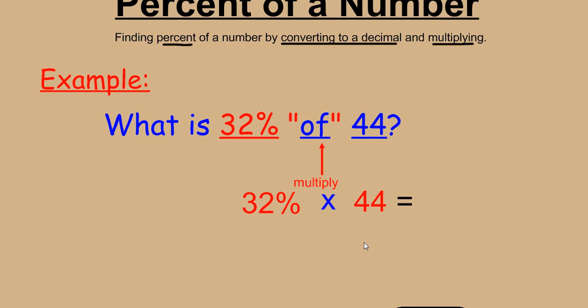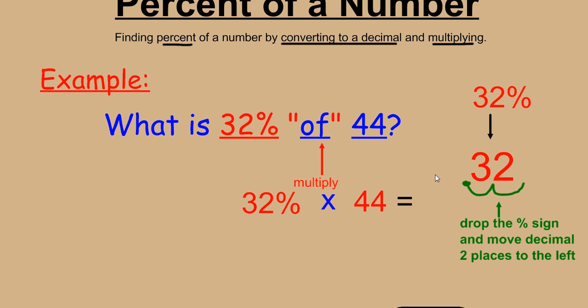Now, it's easiest if you first convert the percent into a decimal. So 32% as a decimal, we simply rewrite the number. And then, we're going to move the decimal two places to the left and drop the percent sign.